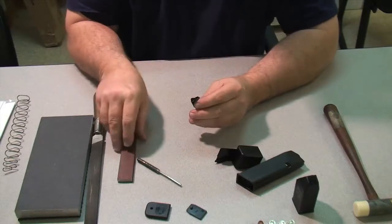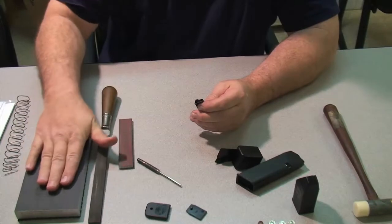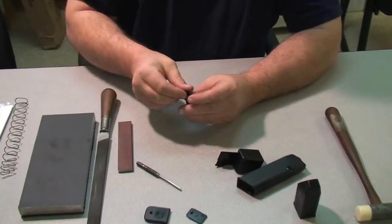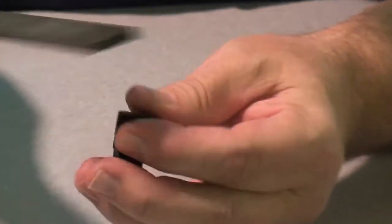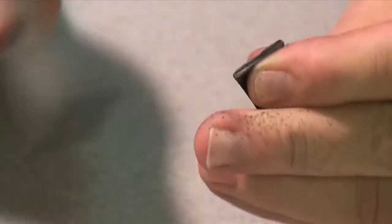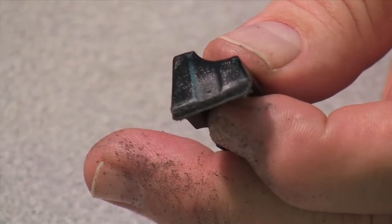As I said, you can use a sanding block, a file, or sandpaper on a flat surface. Either one will work fine. Most people have a file so we'll use the file. What we're going to do is simply roll a nice little radius on the backside of this follower. And we're not trying to take any length off of it. What we're trying to do is just put a small radius on the back of that follower.